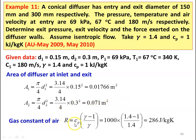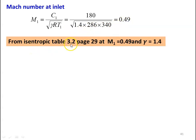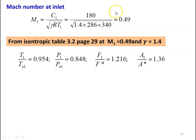The gas constant of air R equal to Cp into (gamma minus 1) by gamma, which is 1000 into 0.4 divided by 1.4, equal to 286 Joules per kilogram Kelvin. The Mach number at the inlet M1 equal to C1 divided by square root of gamma R T1, which is 180 divided by square root of 1.4 into 286 into 340, equal to 0.49. From isentropic table 3.2 at M1 equal to 0.49 and gamma equal to 1.4, we take T1/T01 equal to 0.954, P1/P01 equal to 0.848, F1/F* equal to 1.216, and A1/A* equal to 1.36.